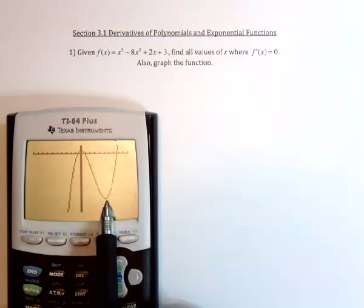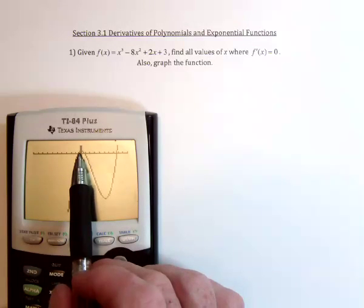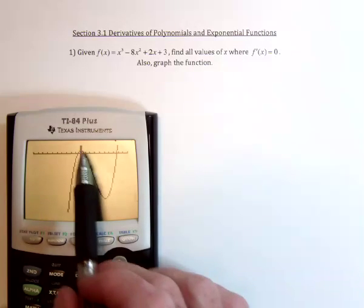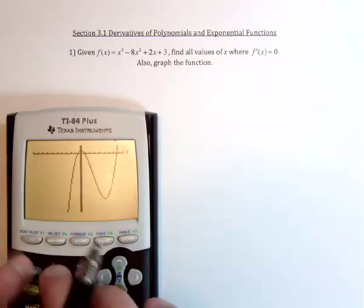At that minimum value right there. Likewise, at this top of the arc right up here, there would be a horizontal tangent line. So we're looking for two such answers.